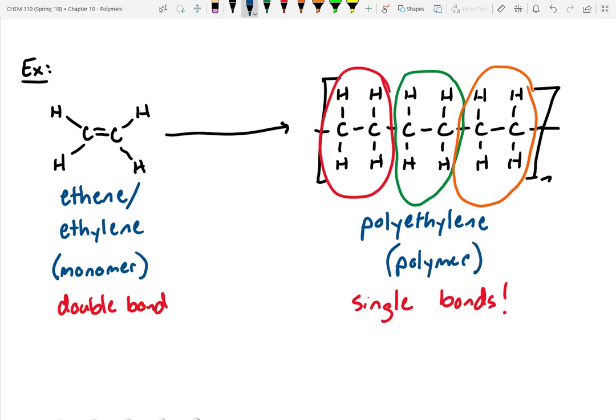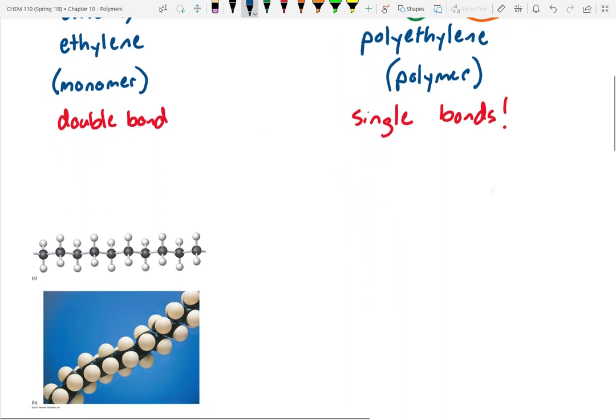So polyethylene just means you've got many ethylene units linked together into this long polymer chain. Does anybody know what polyethylene is used in? I see a few water bottles floating around the room. That's actually made of polyethylene. Polyethylene is one of the most used plastics on our planet. We use a lot of polyethylene because it's cheap to make, it's durable, it's rugged, it can be recycled easily. It's actually fairly environmentally friendly as long as it's recycled.